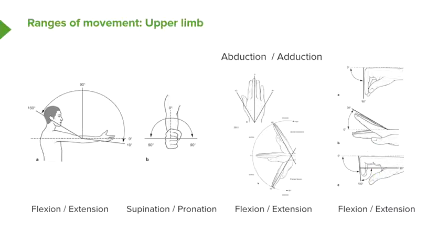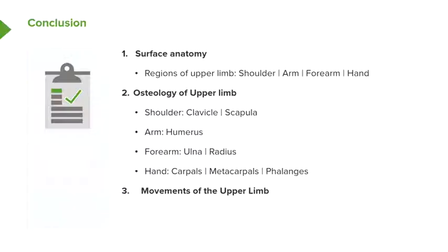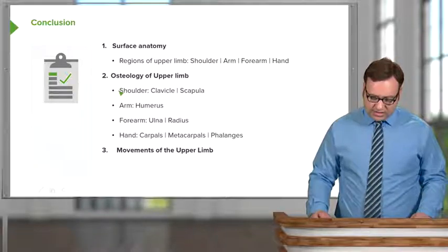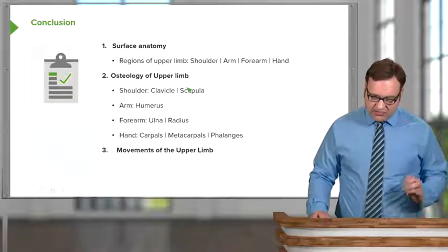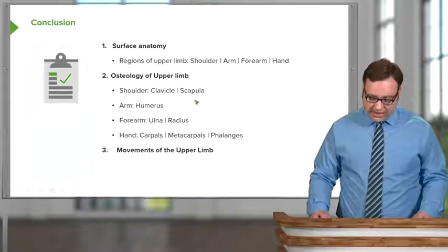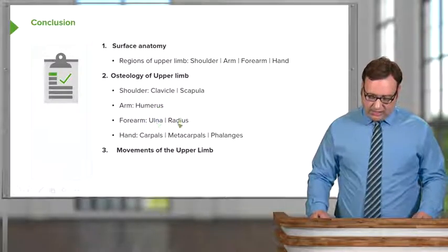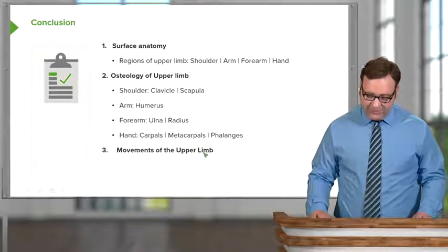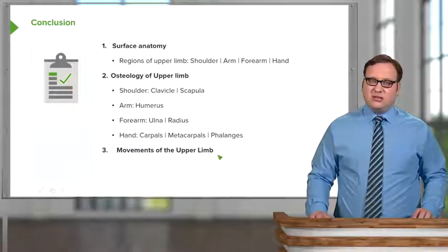So a whole range of movements characterized, which gives the upper limb its characteristic high level of mobility. This is created by a whole series of muscles, which we'll talk about in later lectures, and these muscles are attached to those bony landmarks that I've described. So we started off by looking at the surface anatomy, looked at the various regions, and then looked at the various bony landmarks of the upper limb: the clavicle, the scapula, the humerus, the ulna, the radius, the carpals, the metacarpals, and the phalanges. And then we finished by looking at the various movements of the upper limb.